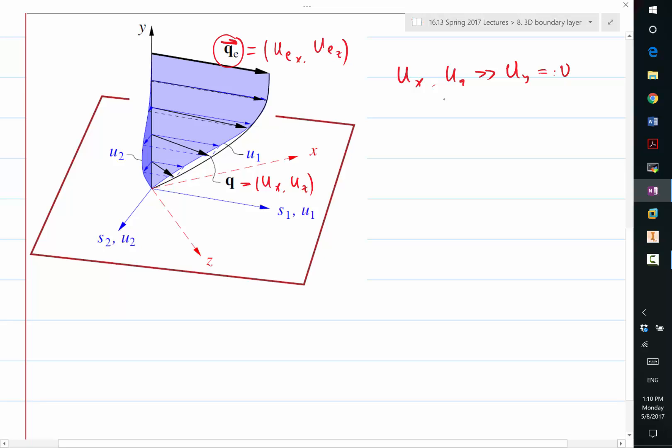So let's actually call them UE and WE. So that we still use U, V, and W to denote the X, Y, and Z direction velocities. So let's call this Q as U and W.